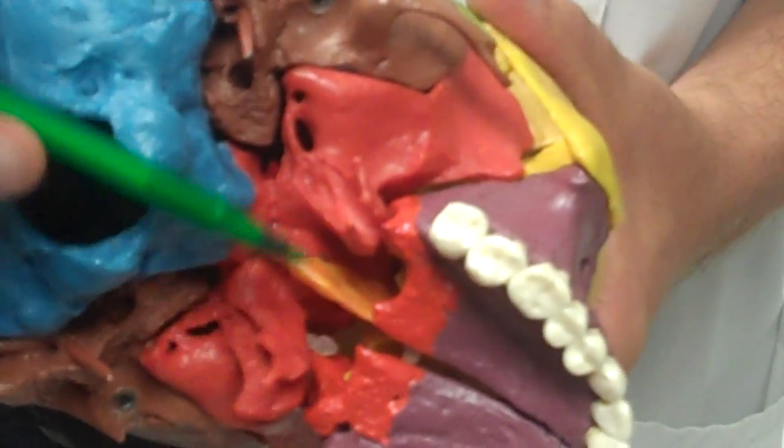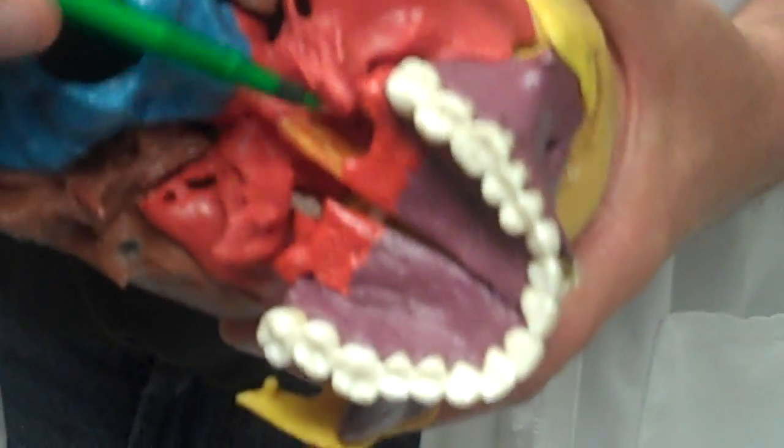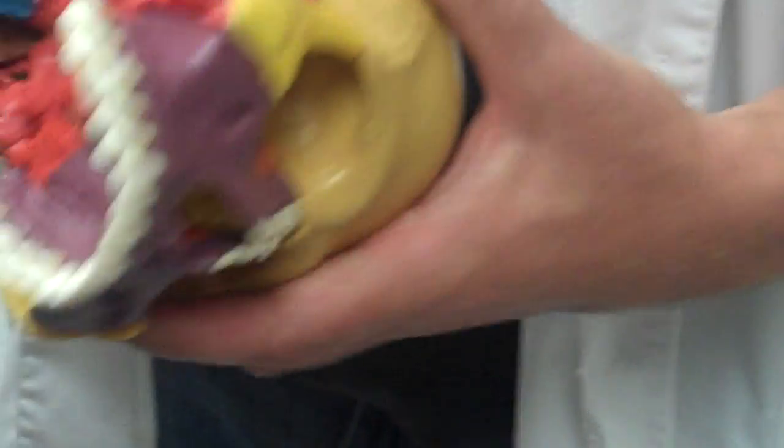Okay. Then we have the pterygoid processes. They look like wings sticking down. Pterygoid processes look like wings sticking down.